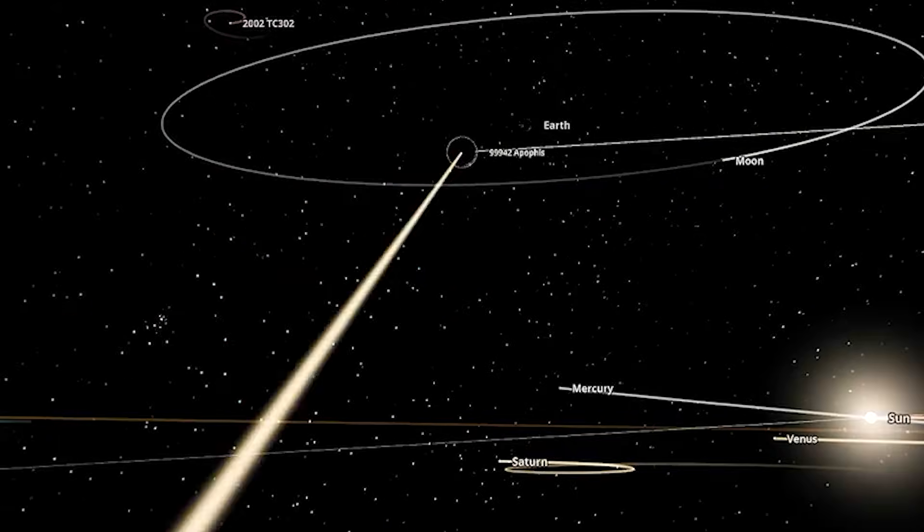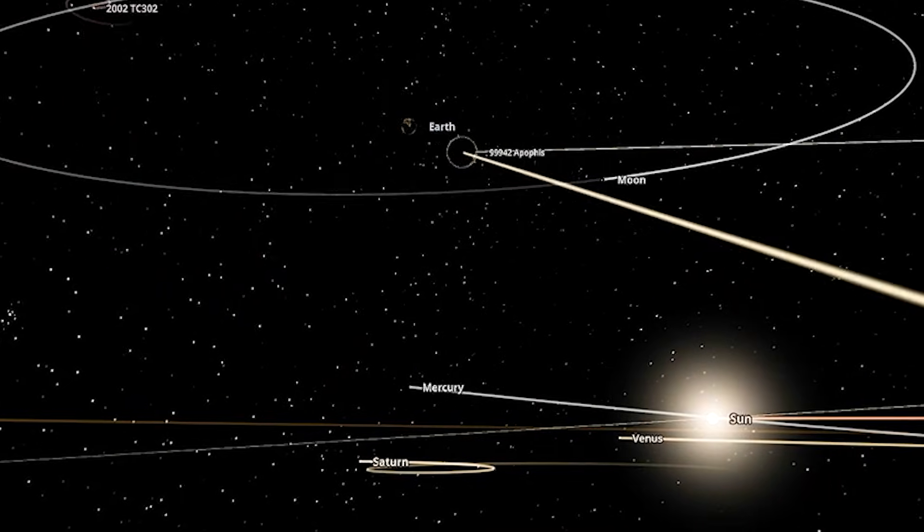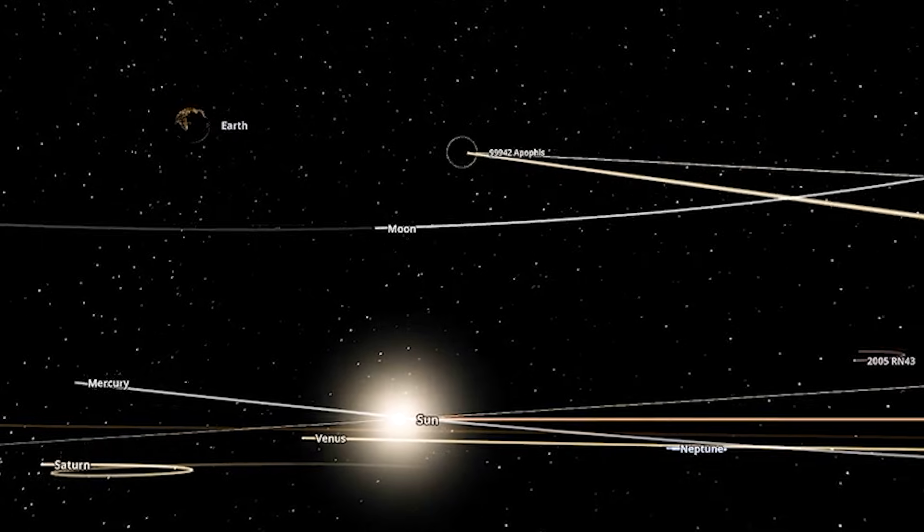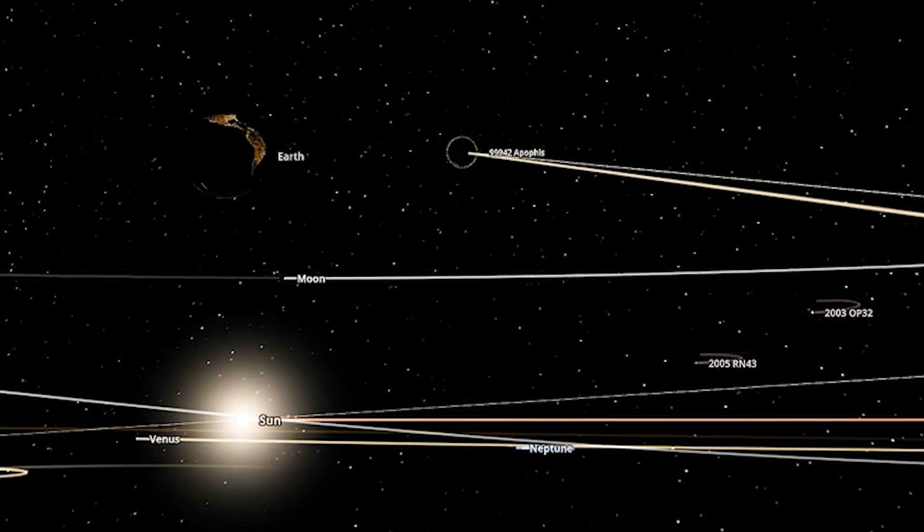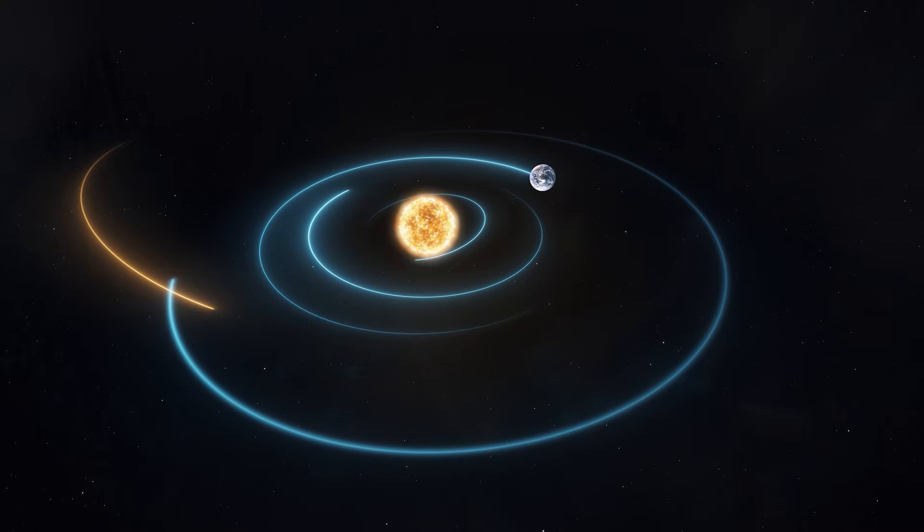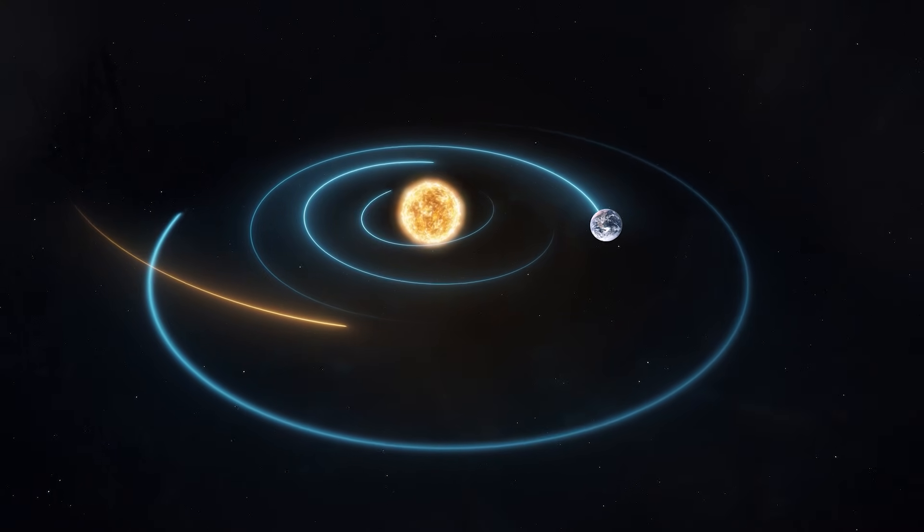What makes this phenomenon so scary is that we're not just talking about a simple calculation. The Yarkovsky effect, combined with Earth's gravity and other celestial bodies, creates a true cosmic ballet. A slip, a small adjustment here or there, and everything can drastically change.